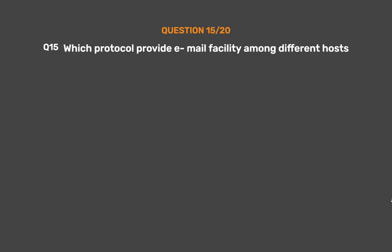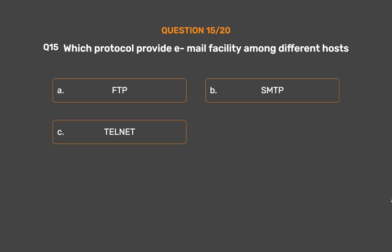Question number 15. Which protocol provides email facility among different hosts? Option A: FTP. Option B: SMTP. Option C: (options continue)